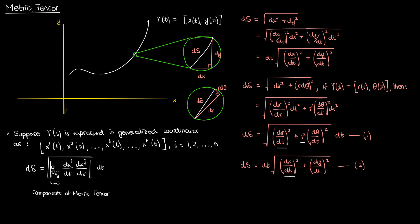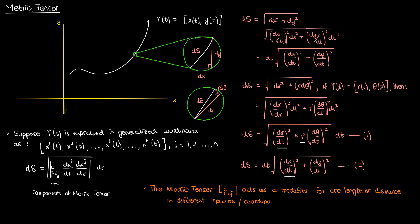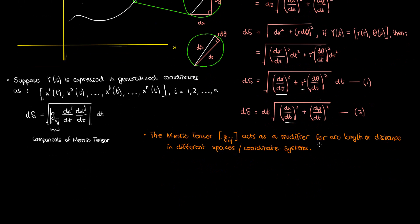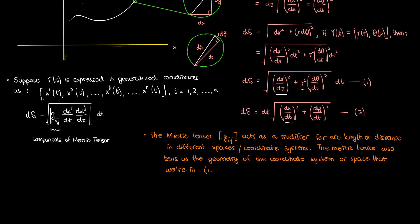The final touch is to add an absolute value because we don't want the square root of a negative number. So the metric tensor basically acts as a modifier for arc length or distance in different spaces or coordinate systems. If I have a curve and want to calculate its length in different coordinate systems, I can use the metric tensor corresponding to that particular coordinate system. Even more intuitively, the metric tensor tells us the geometry of the coordinate system or space — it can be used to determine angles, distances, and the version of the Pythagorean theorem in those different spaces. The key idea is that the metric tensor tells us the geometric properties of different spaces.